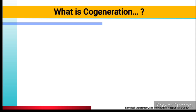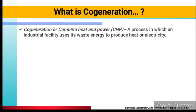What is co-generation? Co-generation is a process in which an industrial facility uses its waste energy to produce heat or electricity. This is a process in which we use waste energy or heat which is used in industries — heat which is used to generate electricity. That heat, or you can say steam, is used for other applications.